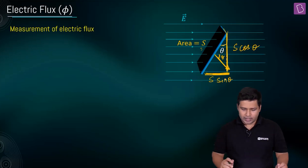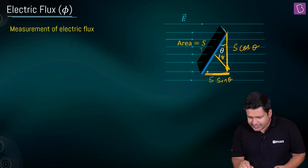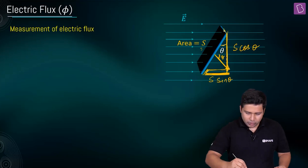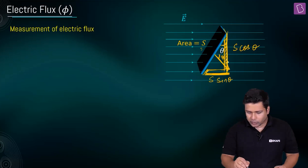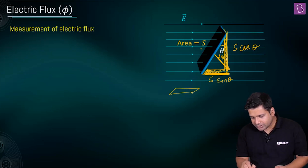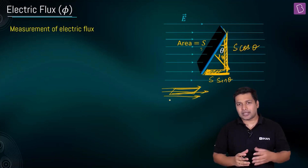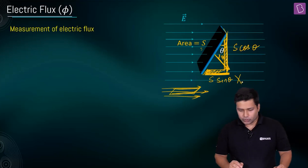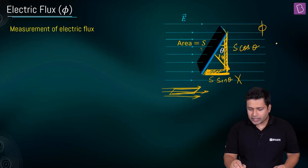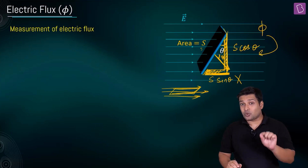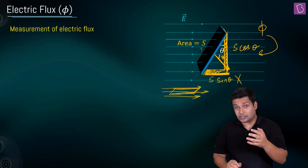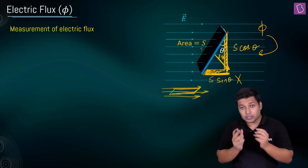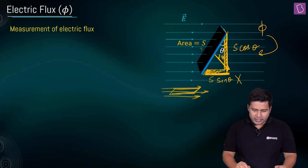One component is along the direction of the electric field and another is perpendicular to it. Through the component S sinθ, which is parallel to the electric field, you can see that no net lines of electric force are cutting through that area — meaning the net flux through it is zero. So through S sinθ, the flux is zero.